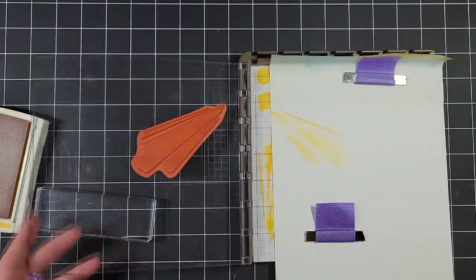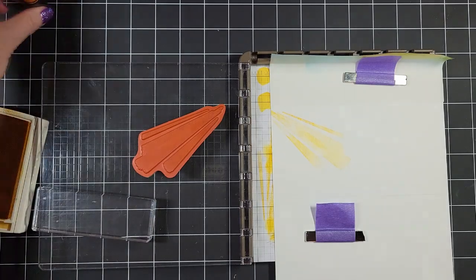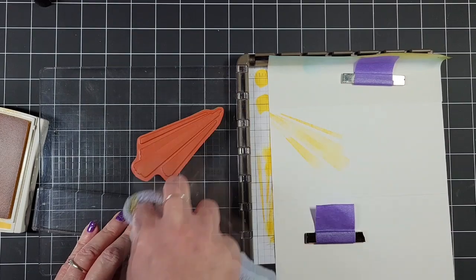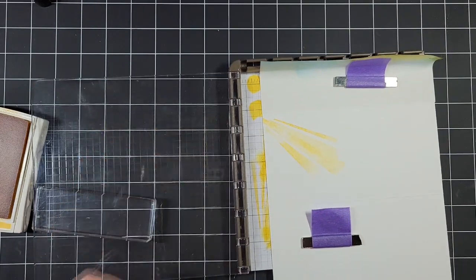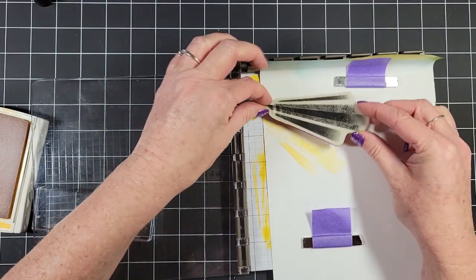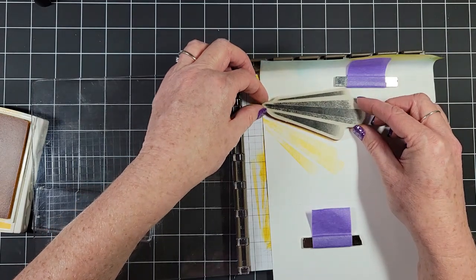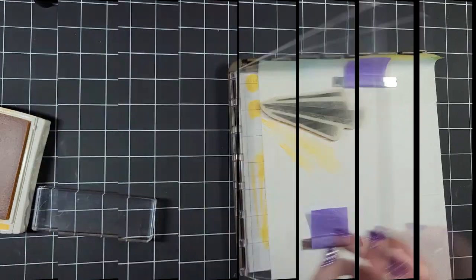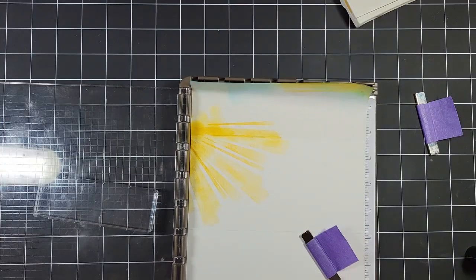So I'm stamping that down and I'm going to come in and wipe off my stamp so that I don't get ink where I don't want it, which I'm notorious for. And then I'm going to reposition this for where I want it, close the door, and repeat this process.